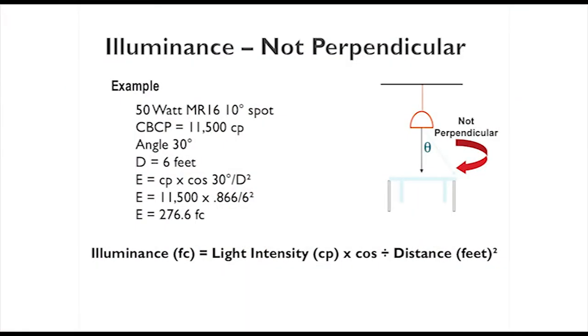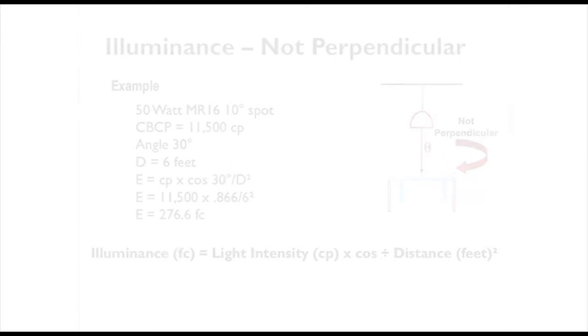We use this as a cosine law. Here's an example of it. So what we do is, we would use what's called a candela distribution curve. These distribution curves show us the light intensity at any given angle. If we know what the light intensity is at any given angle, and we know how far the distance is, we can quite simply just find out how many foot candles will arrive at that place.